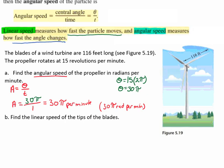Now we're asked to find the linear speed of the tips of the blade. Remember that linear speed measures how fast the particle is moving. For linear speed, we have linear speed equals S divided by t, and we know that S is r times theta. We know what theta is - we just found it, it's 30 pi. We know what our radius is - it's 116 feet, the length of the fan blade.